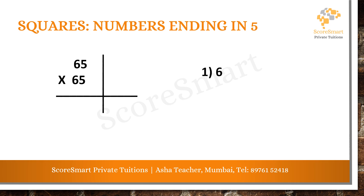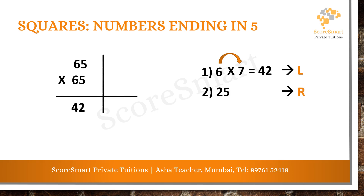First step: the first number is 6. We multiply 6 by the next number, which is 7. So 6 into 7 equals 42 — this is the left side answer. Second step: just write 25 on the right side. Mix them together and we get 4225. So 65 into 65 equals 4225 — a one-step answer.